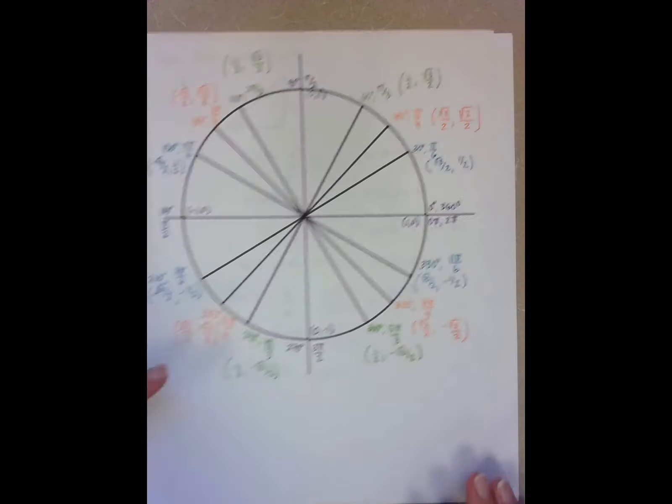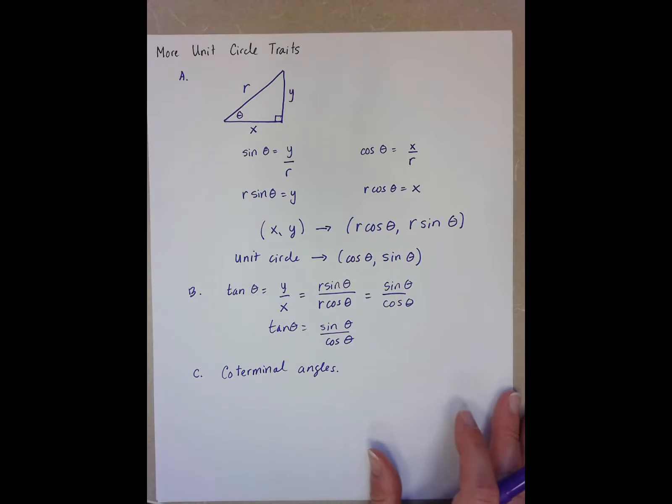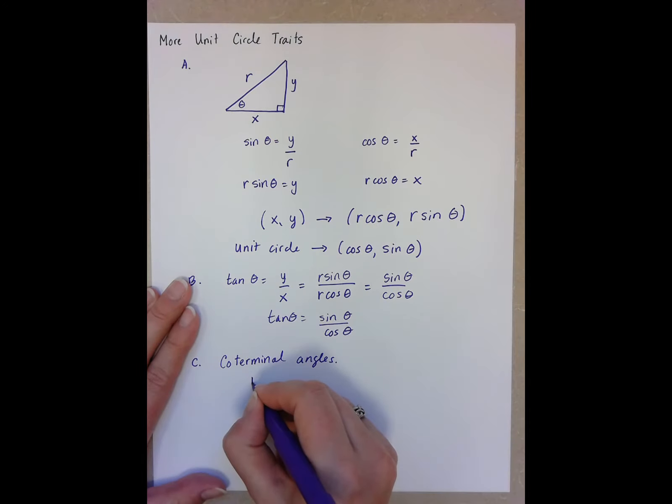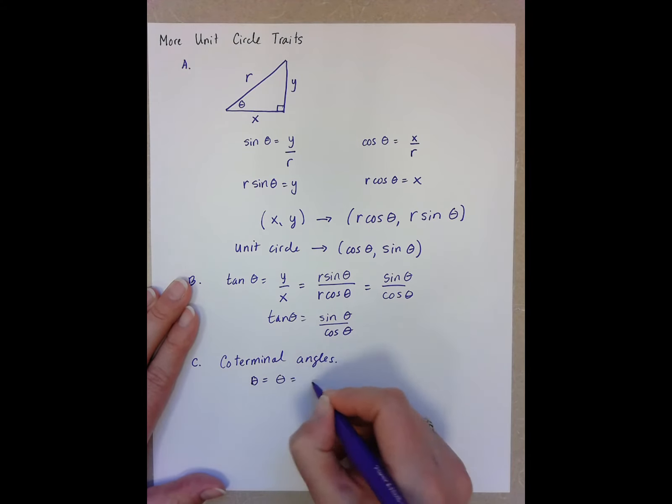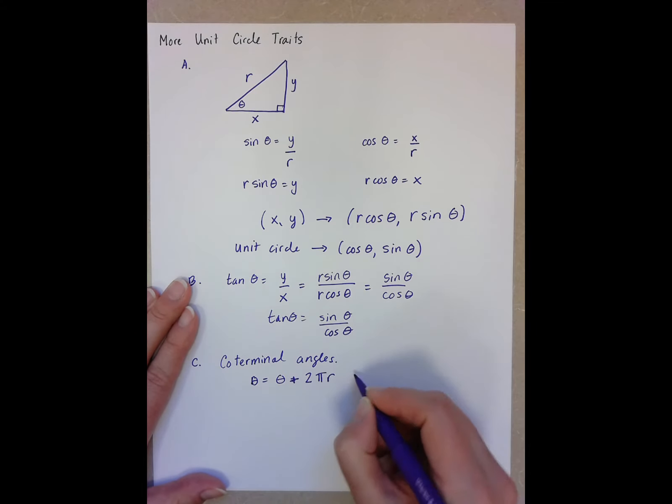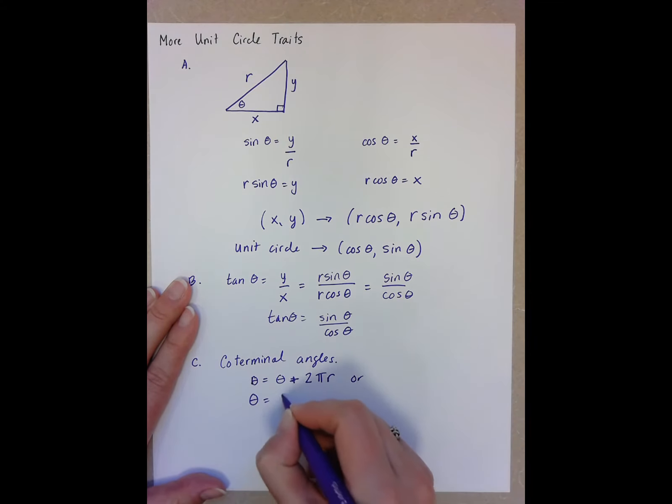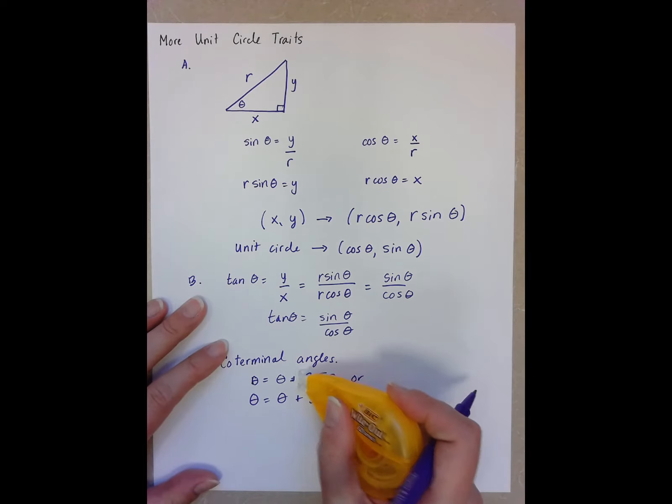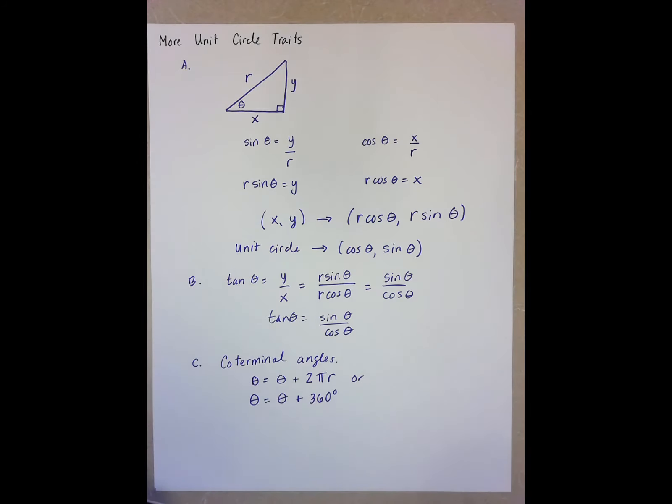And in fact, we can sort of generalize these ways by saying that the angle theta can equal theta plus 2 pi n or theta plus 360 n, depending, again, if you're in degrees or radians. The first one being for radians, the second one being for degrees.